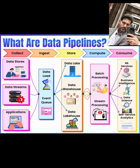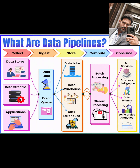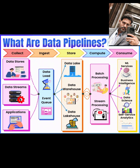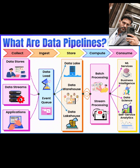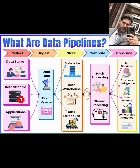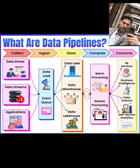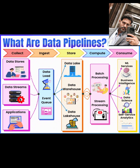Stage two: Ingest. Next up is ingest, the stage where you bring that collected data into your pipeline for processing. This often involves an event queue to handle high-velocity data streams. Tools like Apache Kafka or RabbitMQ are popular here, acting as a message broker to buffer and distribute data.